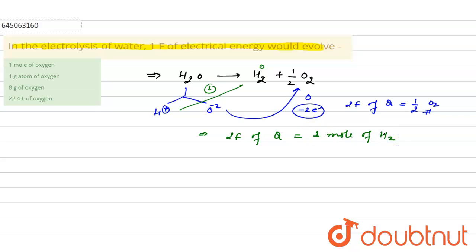Now in the equation we have to tell about oxygen. Two faraday gives you half mol of O2. One faraday will give you one by four mol of O2, and O2 molecular mass is 32 grams. So one by four mol would be equal to eight grams.